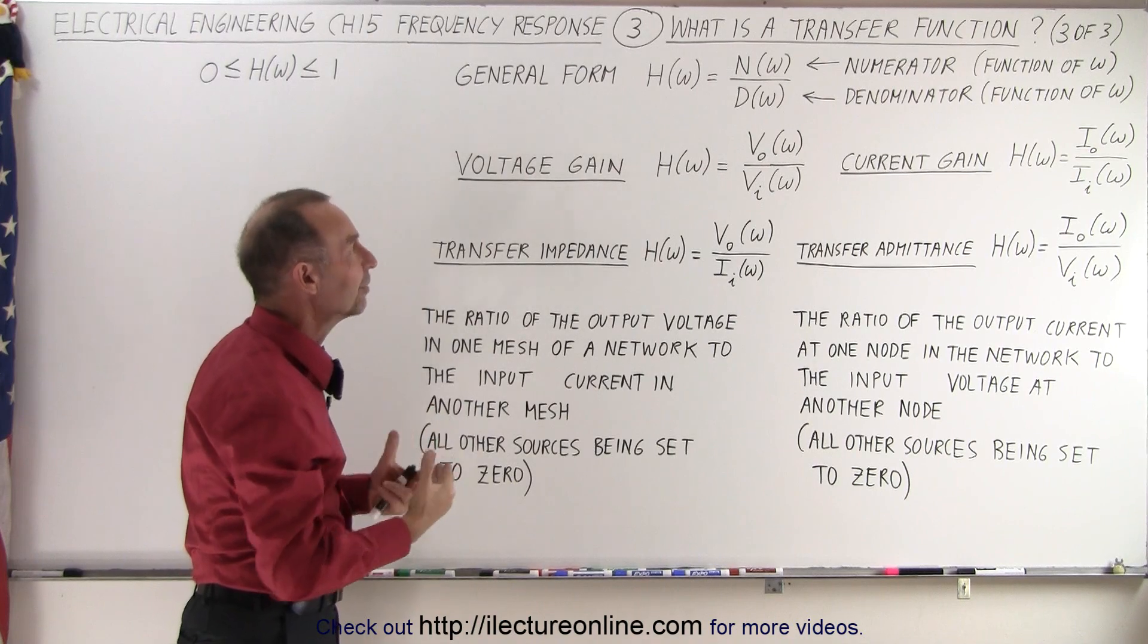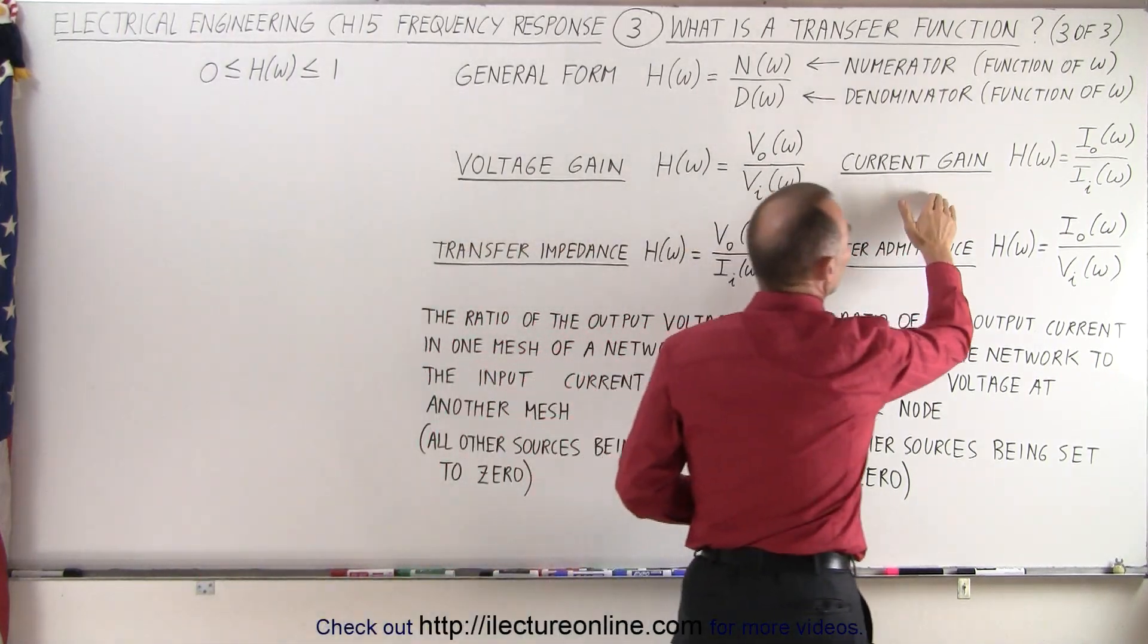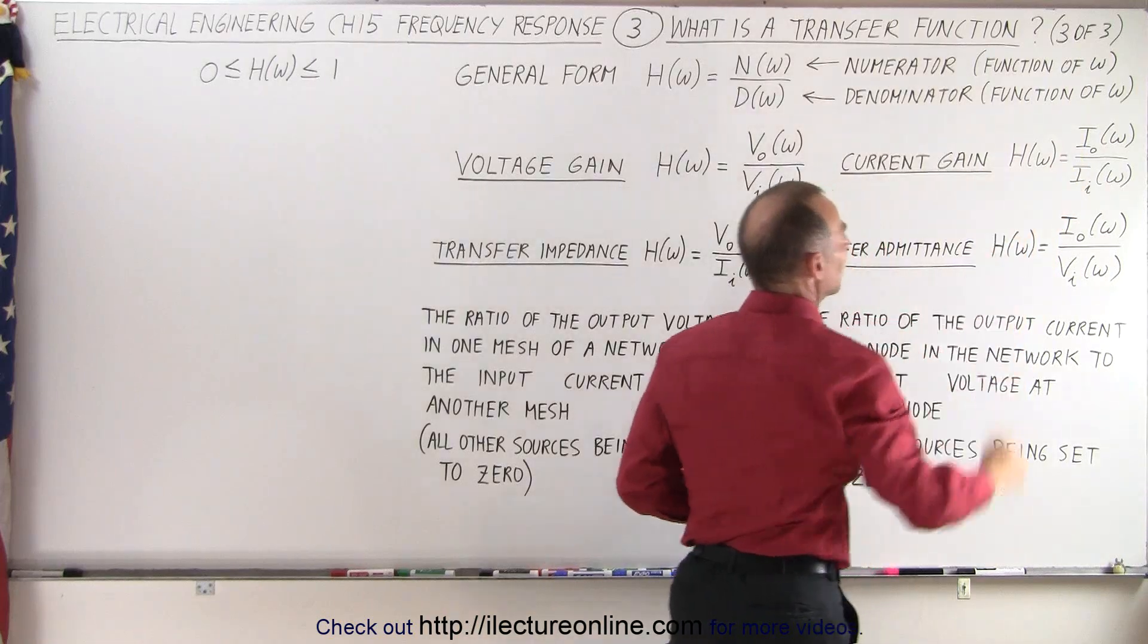We have a similar kind of gain, in this case the current gain, where it's a ratio of the output current divided by the input current.